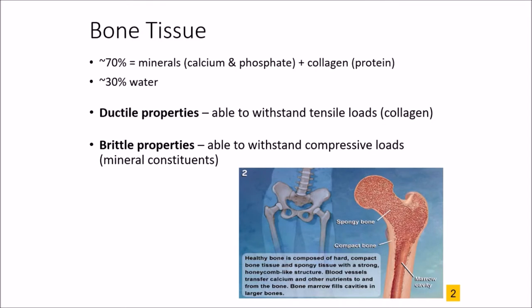Looking at the composition of bony tissue itself, it's roughly 70% minerals — i.e., calcium and phosphate — along with collagen, and the other 30% is water. This structure matches the function, allowing bone to act as it does and to support body weight. We have what are called ductile properties, which give the bone the ability to withstand tensile loading — these are the collagenous proteins in the bone. And then we have brittle properties, which allow it to be very strong in response to compressive loads — these are the mineral constituents such as calcium and phosphate. So we have a structure-function match: minerals give brittle properties for compressive loads, while collagenous proteins allow the bone to withstand tensile loads.